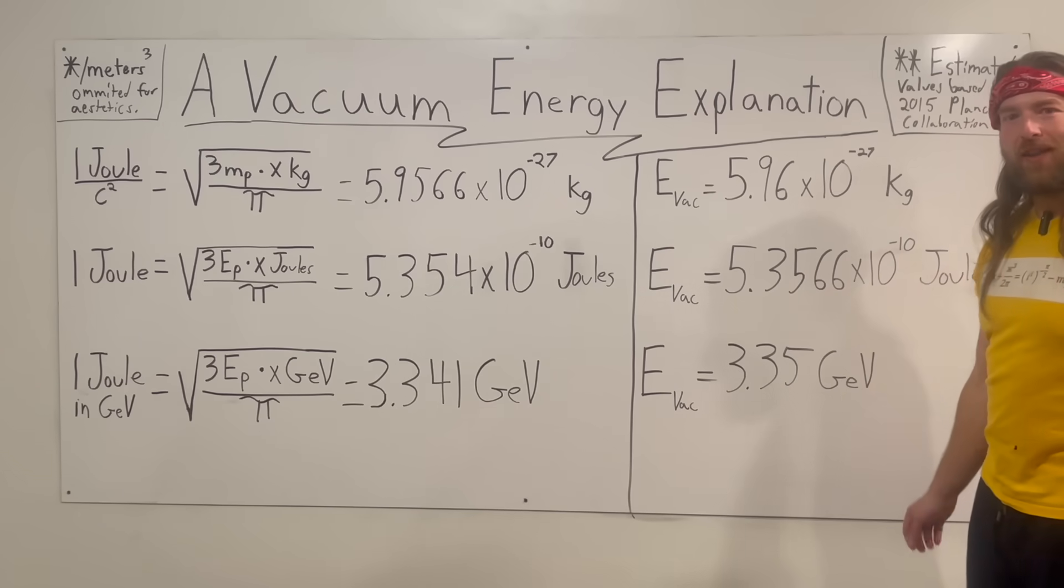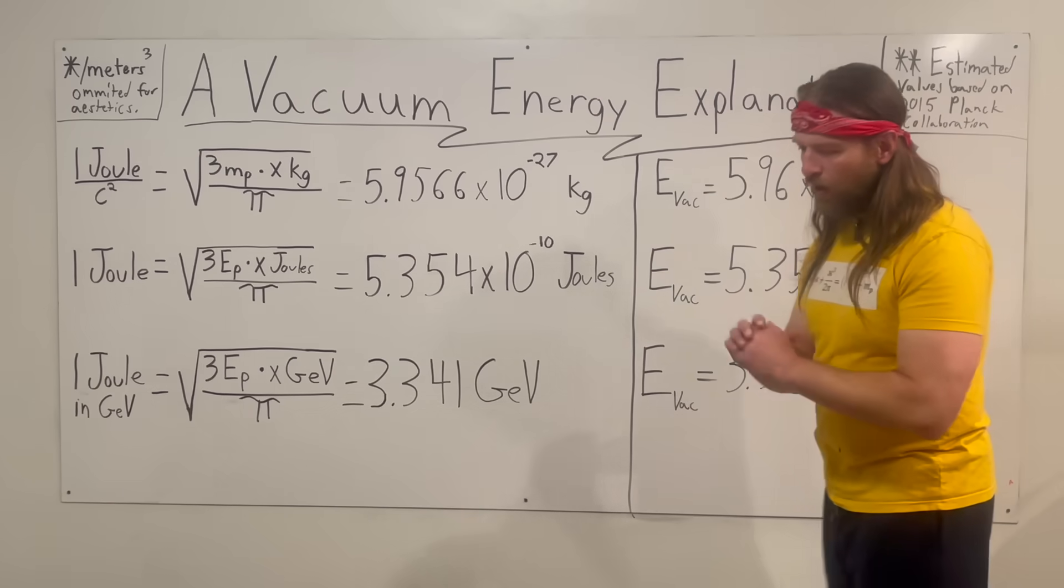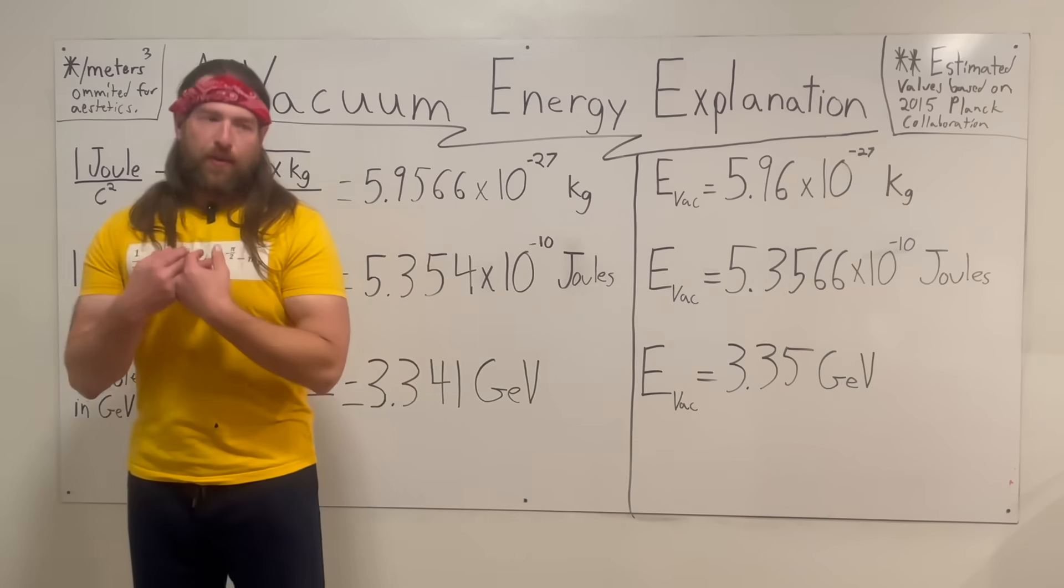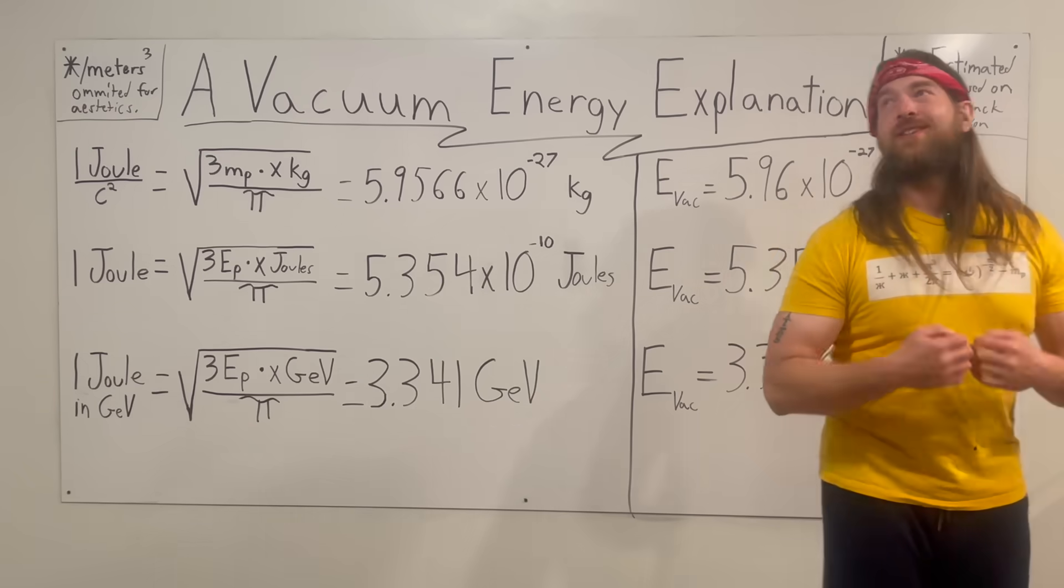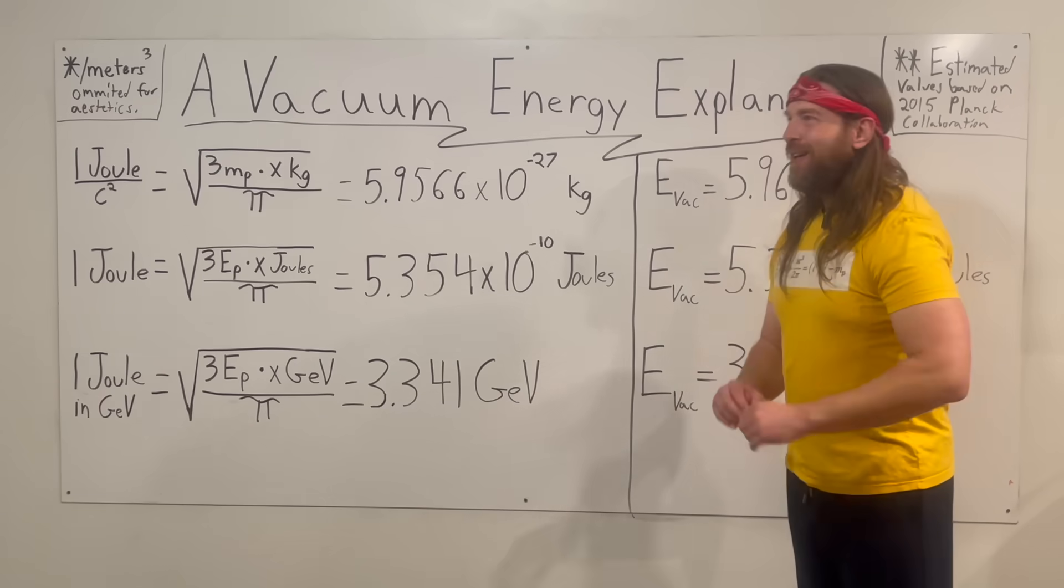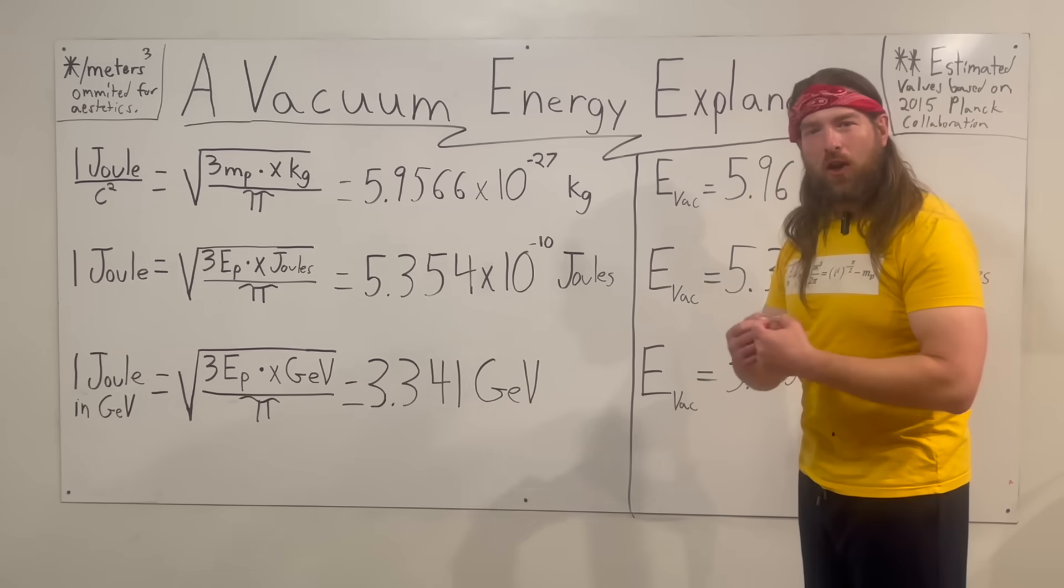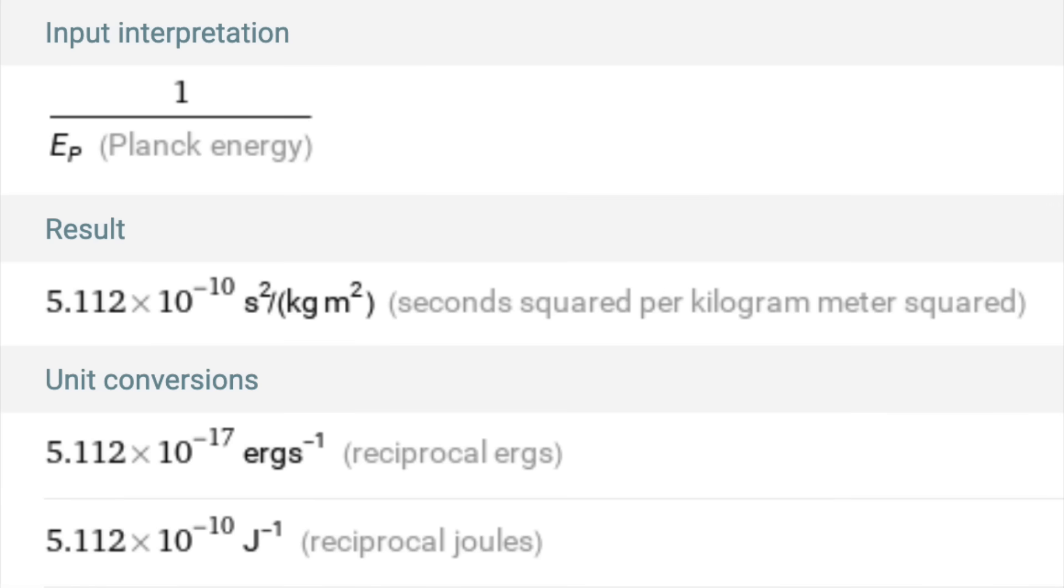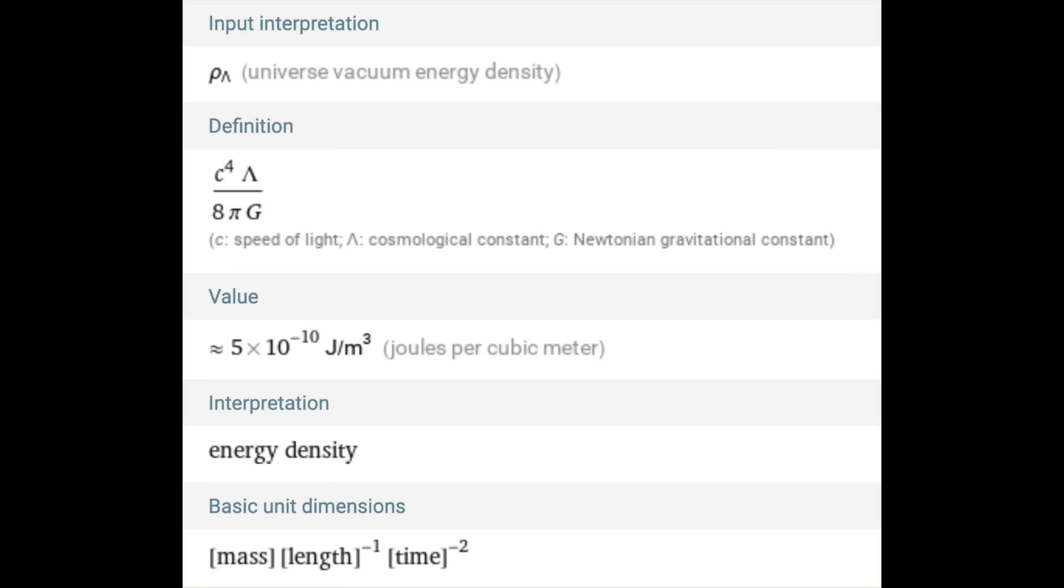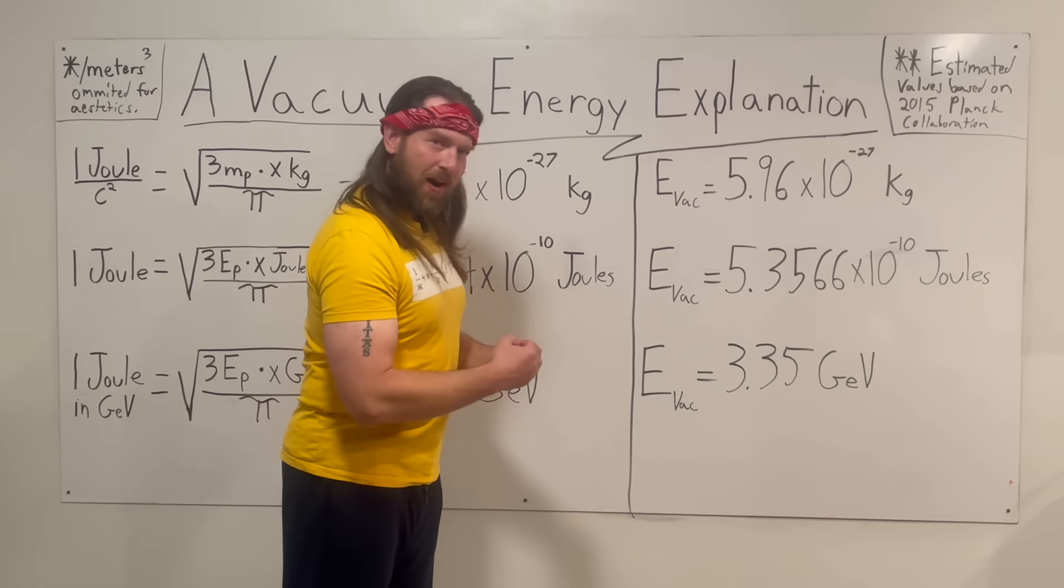This all came about because Thad, John Williamson, and Rick DeWitt have all stressed to me that looking at things inversely or upside down makes a difference. When you go on Wolfram Alpha, if you do one over the Planck energy, you get conspicuously close to the vacuum energy density, except it's reciprocal because it's an inverse.